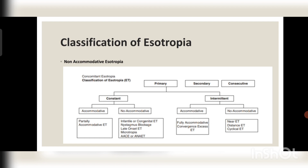Primary esotropia can be constant or intermittent. In constant esotropia it can be accommodative or non-accommodative. Accommodative may be partially or fully accommodative esotropia. Non-accommodative constant esotropia includes infantile or congenital esotropia, nystagmus blockage syndrome, late onset esotropia, microtropia, or acute acquired concomitant esotropia.